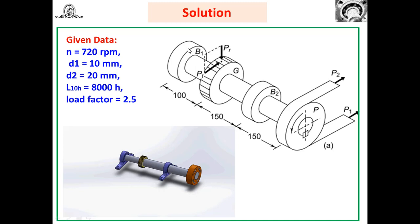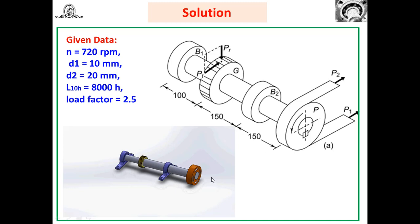Referring to the figure: B1 is bearing one and B2 is bearing two. Between B1 and B2, a spur gear is mounted. The spur gear has straight teeth parallel to the axis and is subjected to two forces: radial load and tangential force. On the right-hand side, pulley P is mounted and rotates in the anti-clockwise direction.